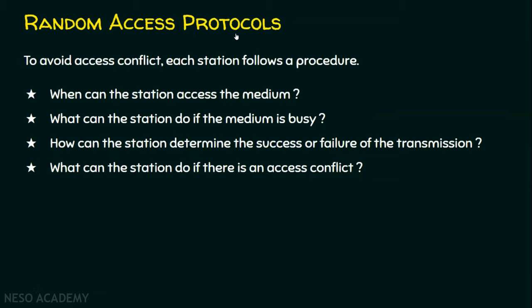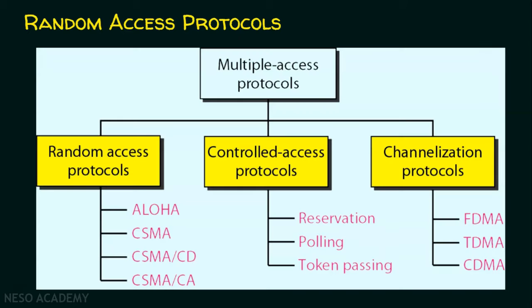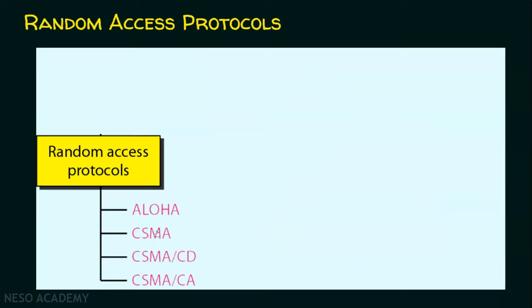The random access protocols include: ALOHA, CSMA (Carrier Sense Multiple Access), CSMA/CD (Carrier Sense Multiple Access with Collision Detection), and CSMA/CA (Carrier Sense Multiple Access with Collision Avoidance). These protocols will be covered elaborately in the upcoming lectures. That covers the random access protocols — now let's move on to the next type.